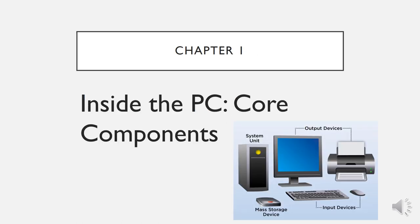We will be starting with Unit 1: Inside the PC Core Components. In the figure you can see there is a system unit, output devices, input devices, and mass storage devices. These are the physical devices that are visible to you — you can touch and feel them. These are physical devices.